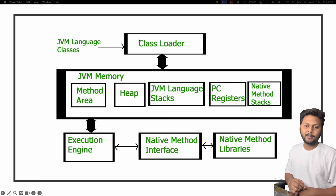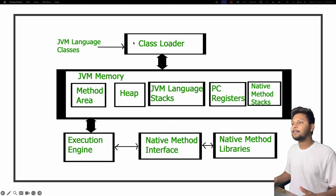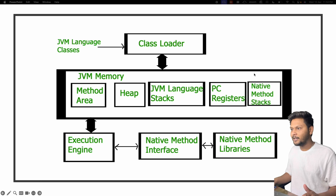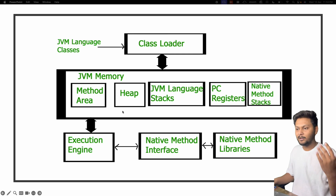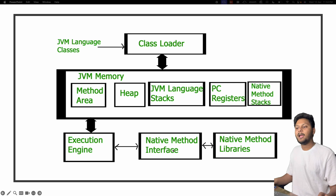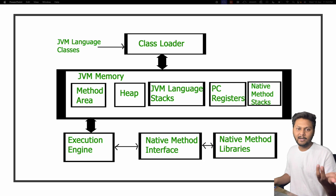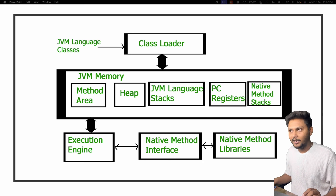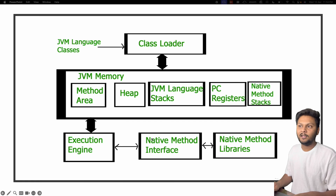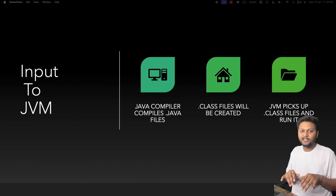The first component is the class loader at the top, then we have the JVM memory area in the middle with multiple parts, and at the end we have the execution engine along with some interfaces and libraries. Let's get started with class loaders.